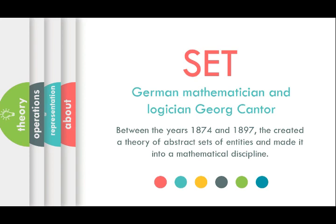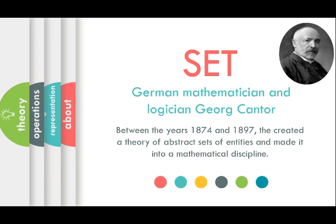George Cantor — who is George Cantor? Between the years 1874 and 1897, George Cantor, a German mathematician and logician, invented or created a theory of abstract sets of entities and made it into a mathematical discipline.